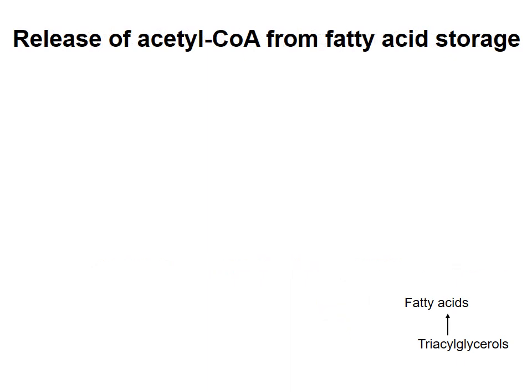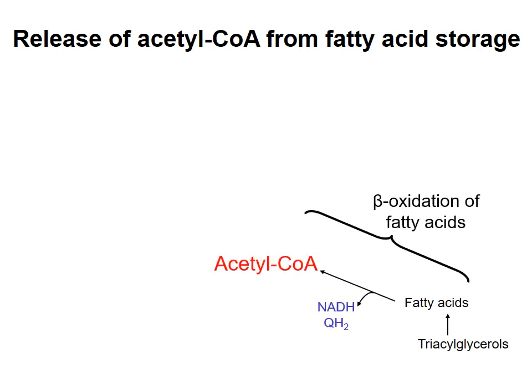To start, I'll talk about the breakdown of triacylglycerols to produce fatty acids. The main point of doing this is to release fatty acids from storage so that they can be broken down to acetyl-CoA, which, as we have seen, can be oxidized in the citric acid cycle to ultimately produce ATP.